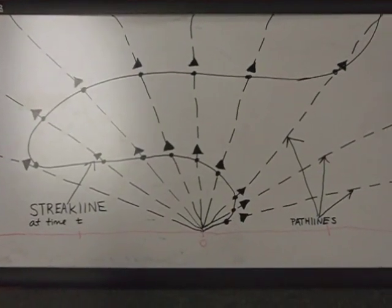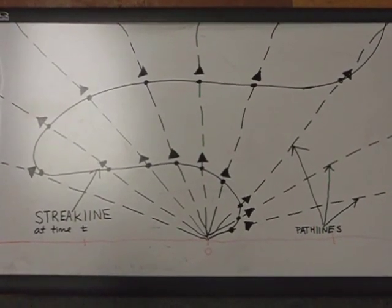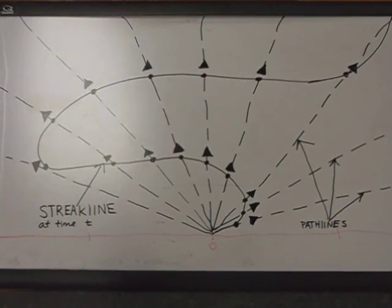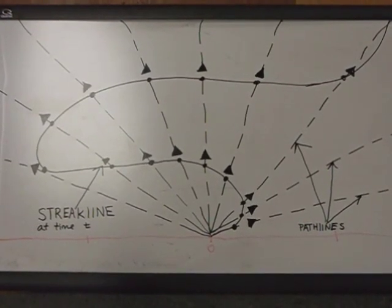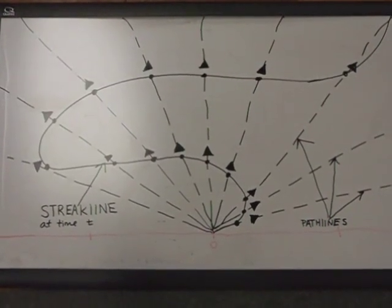As seen in the garden hose demonstration, this representation of an unsteady flow shows how the pathlines radiate tangentially from the point of origin in a streakline at time t. In addition, it should be noted that if this flow were steady, streamlines, streaklines, and pathlines would be the same.